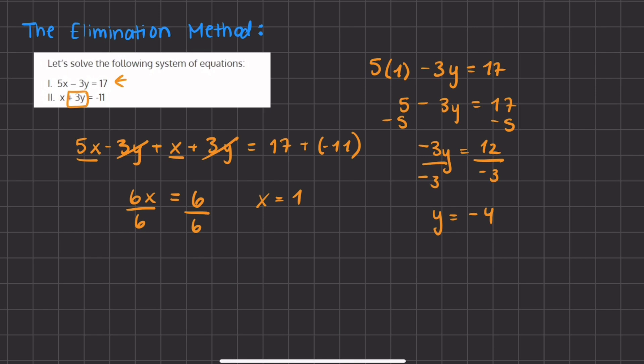So the value of x is 1 and the value of y is negative 4. And that was using the elimination method to solve the system of equations.